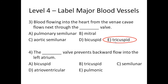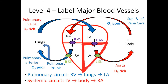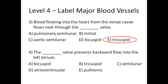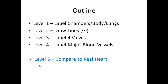Question four: the something valve prevents backward flow into the left atrium. We need a valve between the atrium and ventricle — the left AV valve. These valves are one-way; if blood goes back it's regurgitation and you get heart murmurs. Looking at the choices: right is tricuspid, so the left must be bicuspid or mitral. Mitral isn't listed, so the answer is the bicuspid valve. That's level four — you should now be able to answer test questions about blood flow and valves.